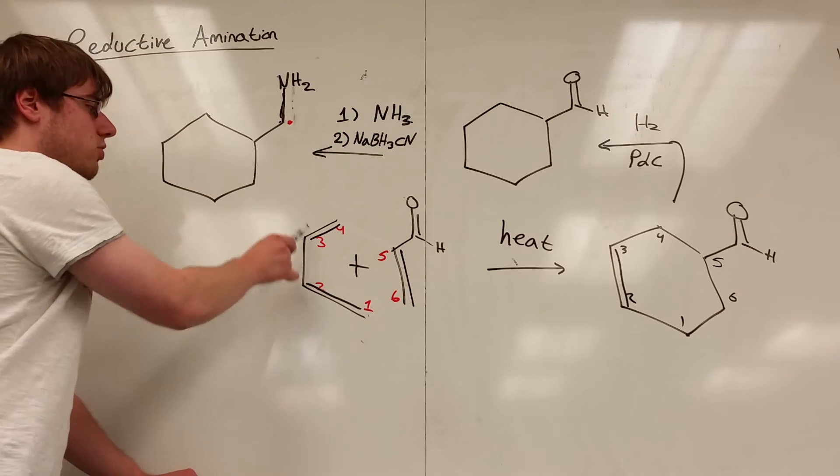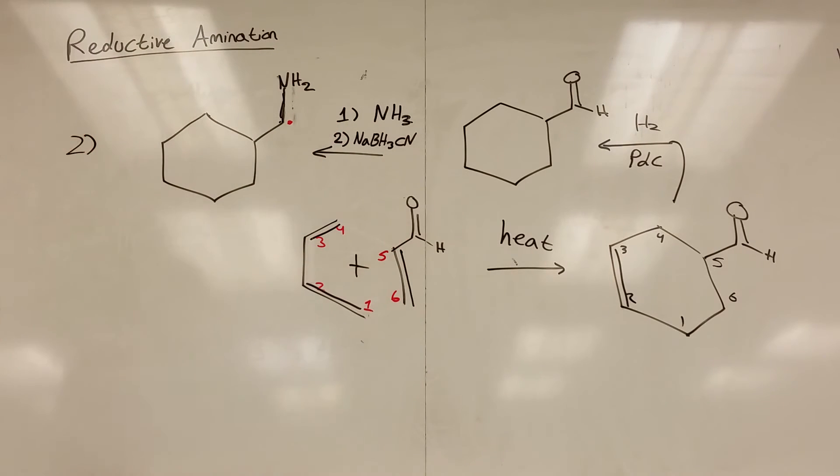So these would be the two pieces that come together in a Diels-Alder reaction by using heat to give you this six-member ring. And now I have 1, 2, 3, 4 and 1, 2, 3. So I have four carbons or less, and that's how you do number two.